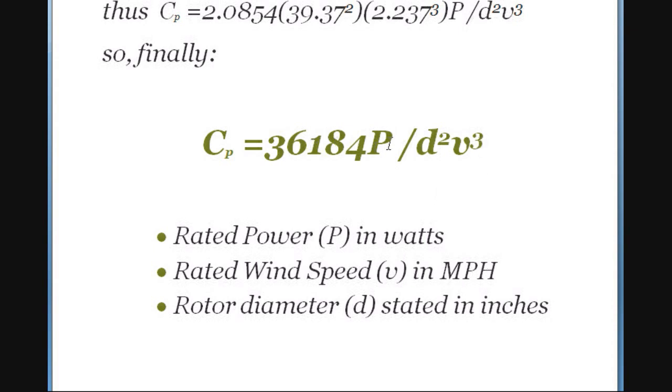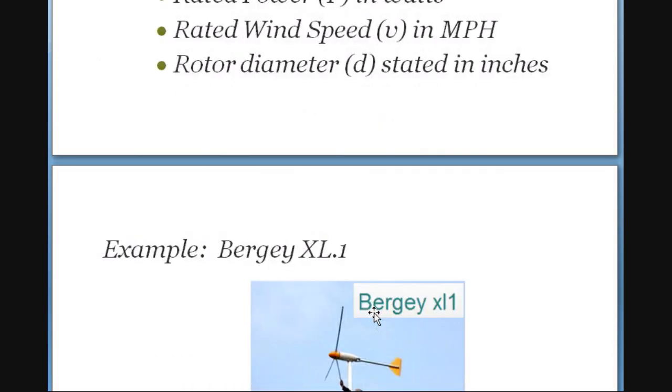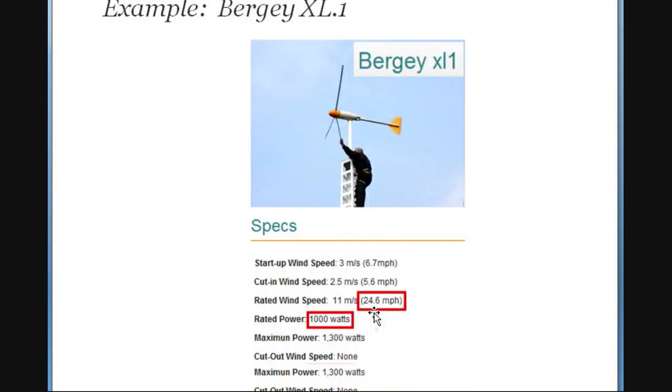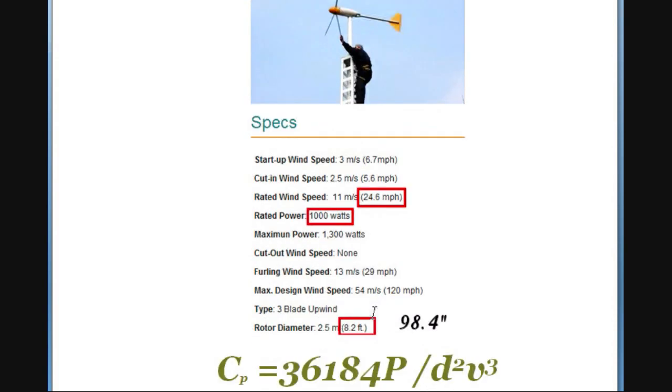So we'll take this new formula, and this is going to be our cheap and dirty solution to be able to evaluate different turbines just by knowing the rated power, the rated wind speed, and the diameter in inches of the rotor. Pretty cool, eh? So let's take an example. I've talked about this unit before. It's been around a long time, the Vergy XL1.